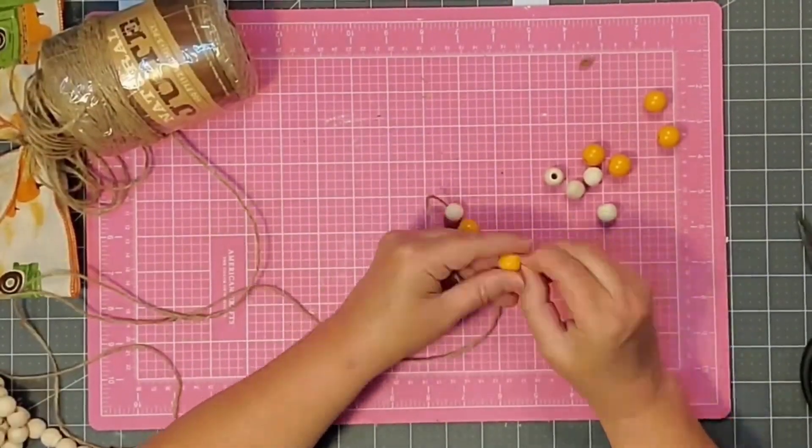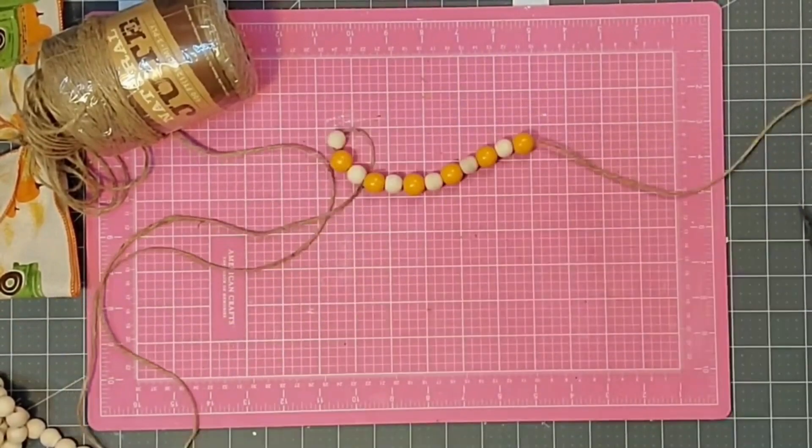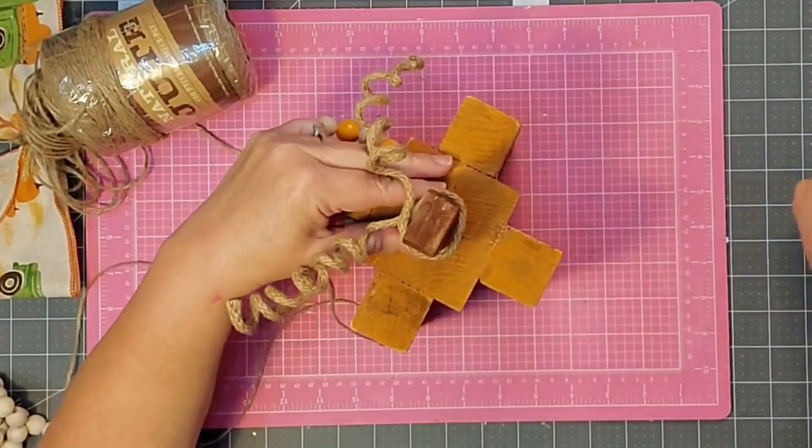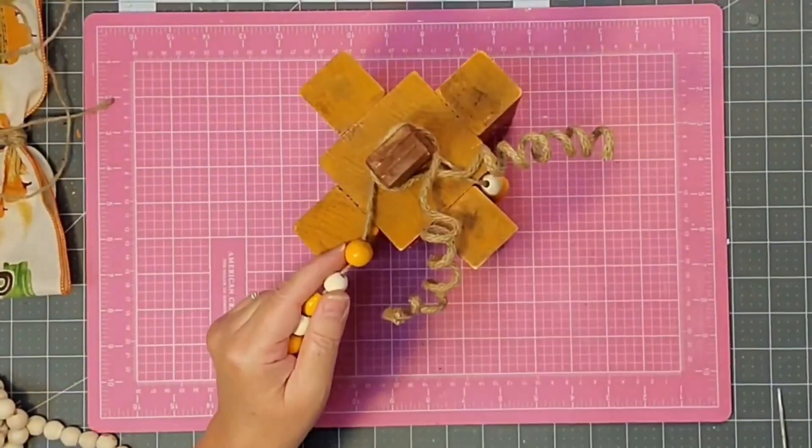Then I'm just going to take my beads and string them onto my twine, and then I'm going to tie a knot at each end, wrap it around the top of the pumpkin, and secure it with some hot glue. I'm just going to let them hang down the sides towards the front of my pumpkin.